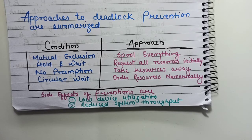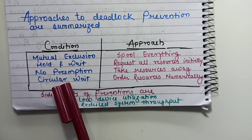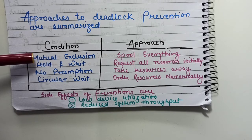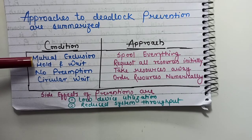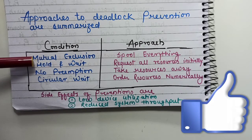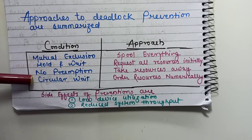There were four approaches for deadlock prevention. Those four are summarized here as you can see: mutual exclusion, hold and wait, no preemption, and circular wait. These are the four necessary conditions for a deadlock. That means if these four conditions hold simultaneously, deadlock will occur in your system. In deadlock prevention, we try to violate one of these conditions.